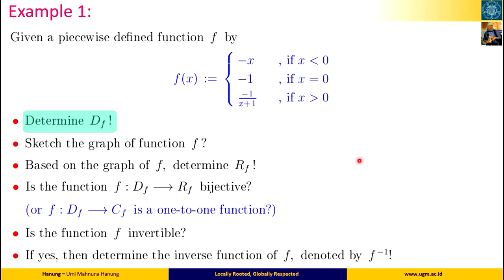Let's take another look at the function f. We see that function f is defined at all negative real numbers x, also at x equals 0, and defined at all positive real numbers x. So it means that the set of all real numbers ℝ is the domain of function f.